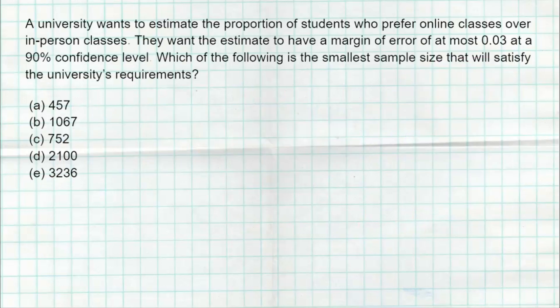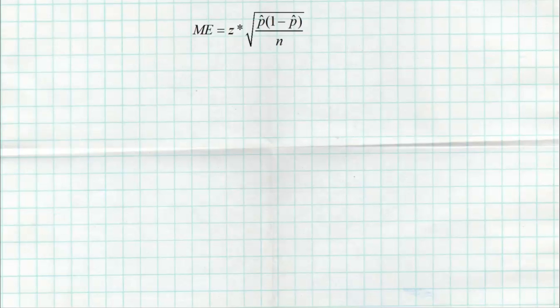Question 23: the correct answer is 752. This is a tough question that involves some math. We're going to start off with the margin of error formula for a single population proportion: margin of error equals Z-star times the square root of P-hat times one minus P-hat divided by N. That is your standard error. We're going to fill in everything we know.